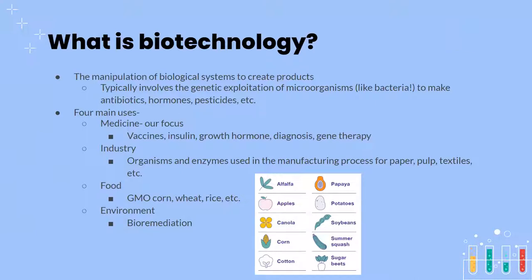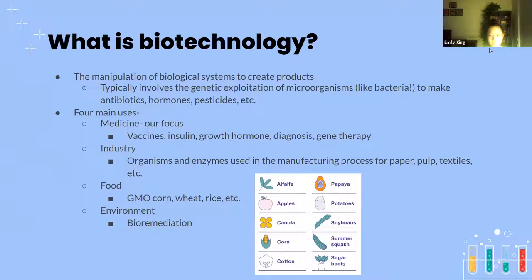Biotechnology is usually used to create antibiotics, hormones, and pesticides. Also, if you know anyone with diabetes, they need excess insulin, and that is also a product of biotechnology dealing with bacteria. There are four main areas of biotechnology.